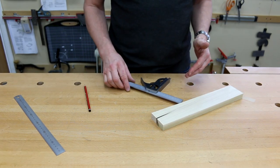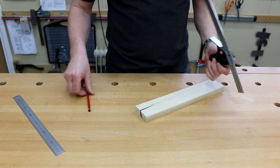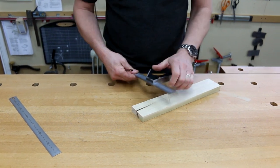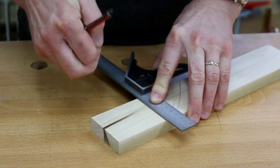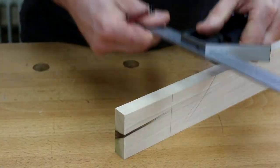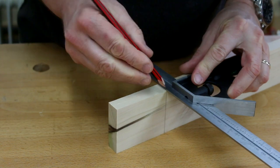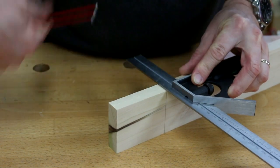One of the standard things you're going to use your combination square for is marking up your face side, face edge, and squaring around your timber. Good crisp line on here, and you could mark your lines all the way around to get a continuous box.